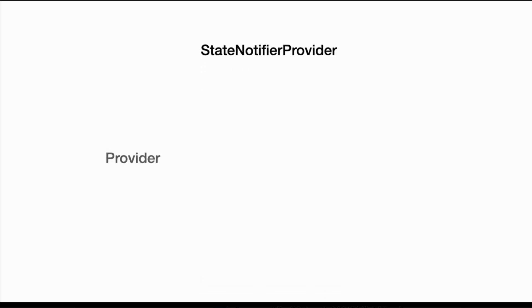In this part of the tutorial we are going to mainly concentrate on StateNotifierProvider and how to implement it in a Flutter application. StateNotifierProvider will try to update the state whenever there is any change in the data. We are going to consider a string example — updating a string via a text field. StateNotifierProvider will have a provider which provides the data and a consumer which consumes the data provided by the provider.